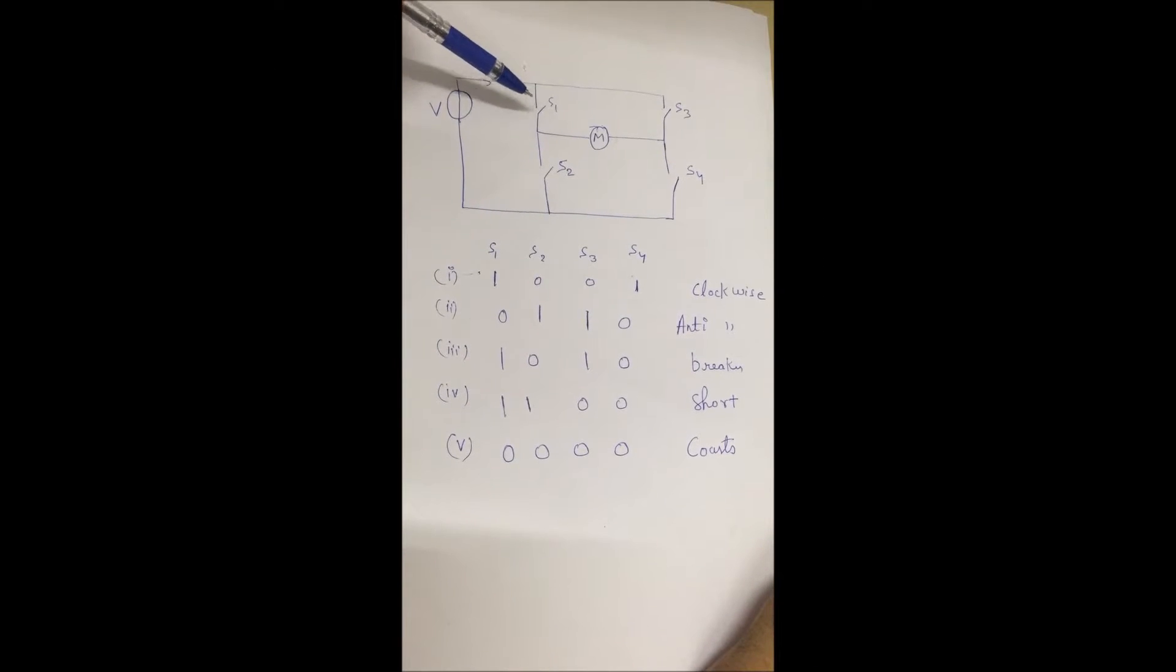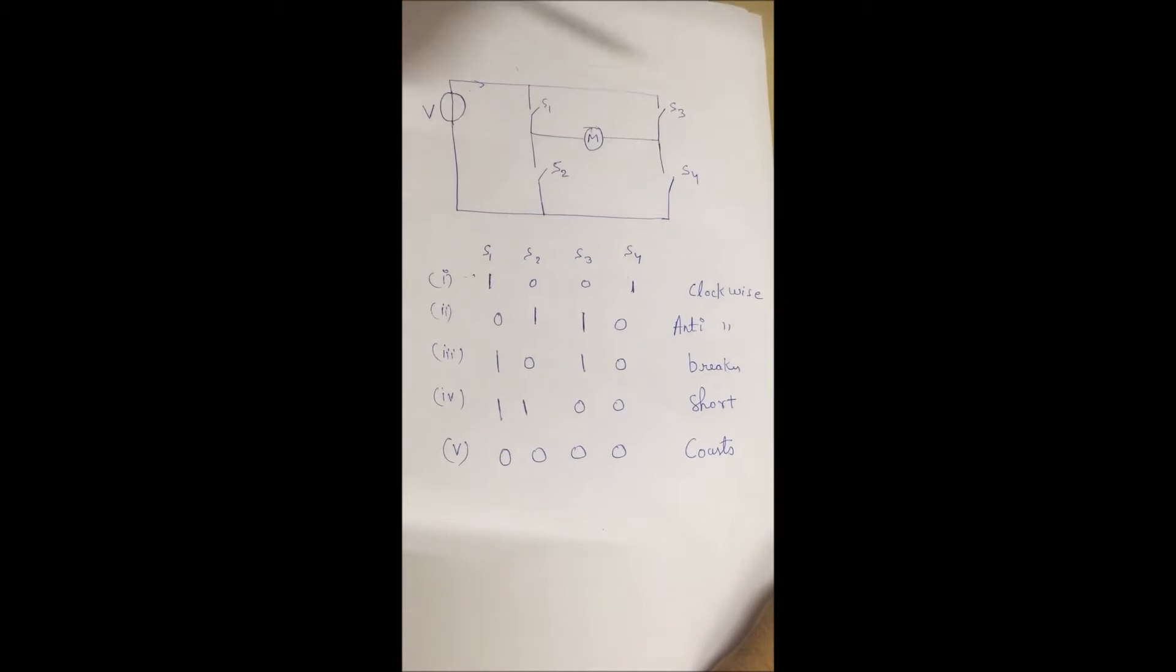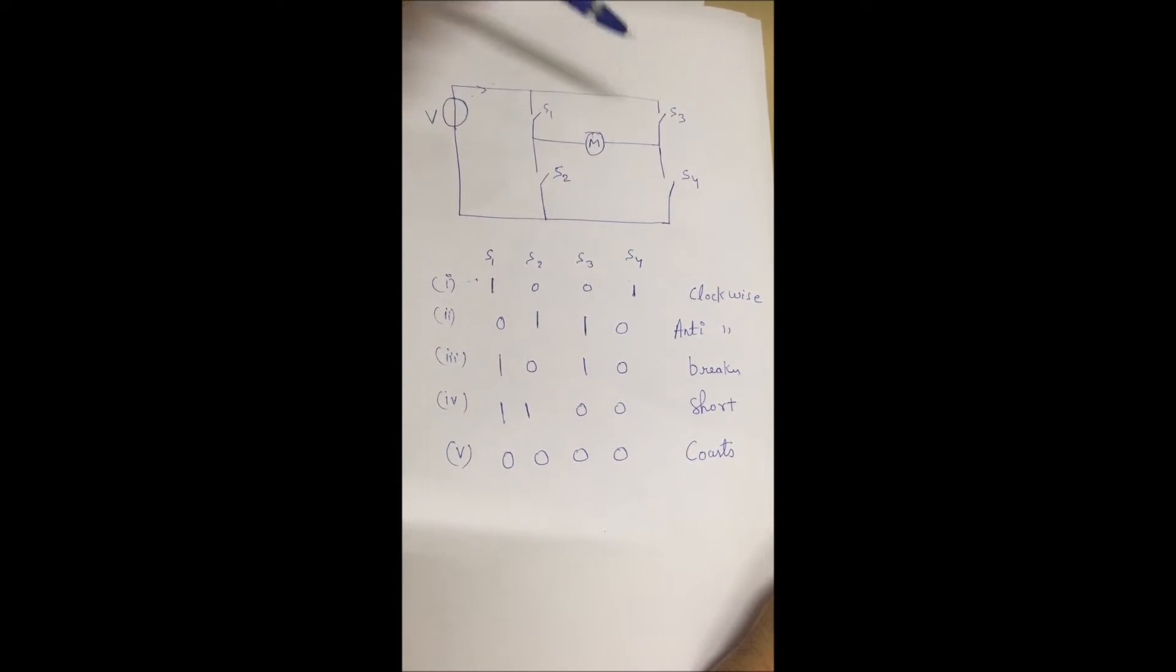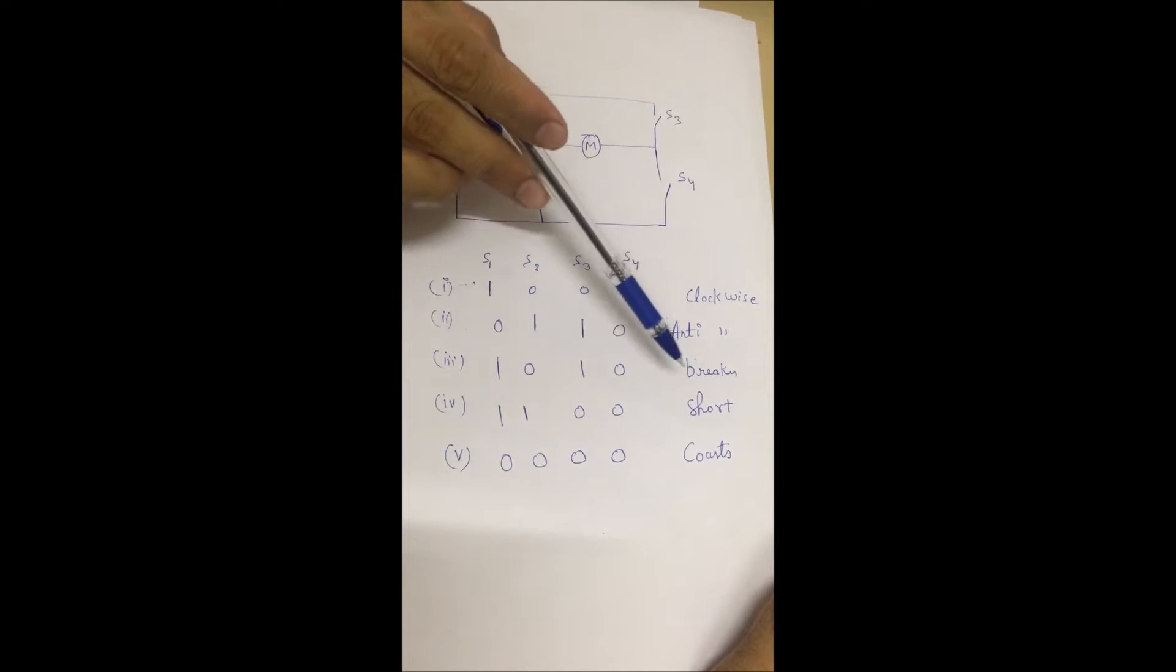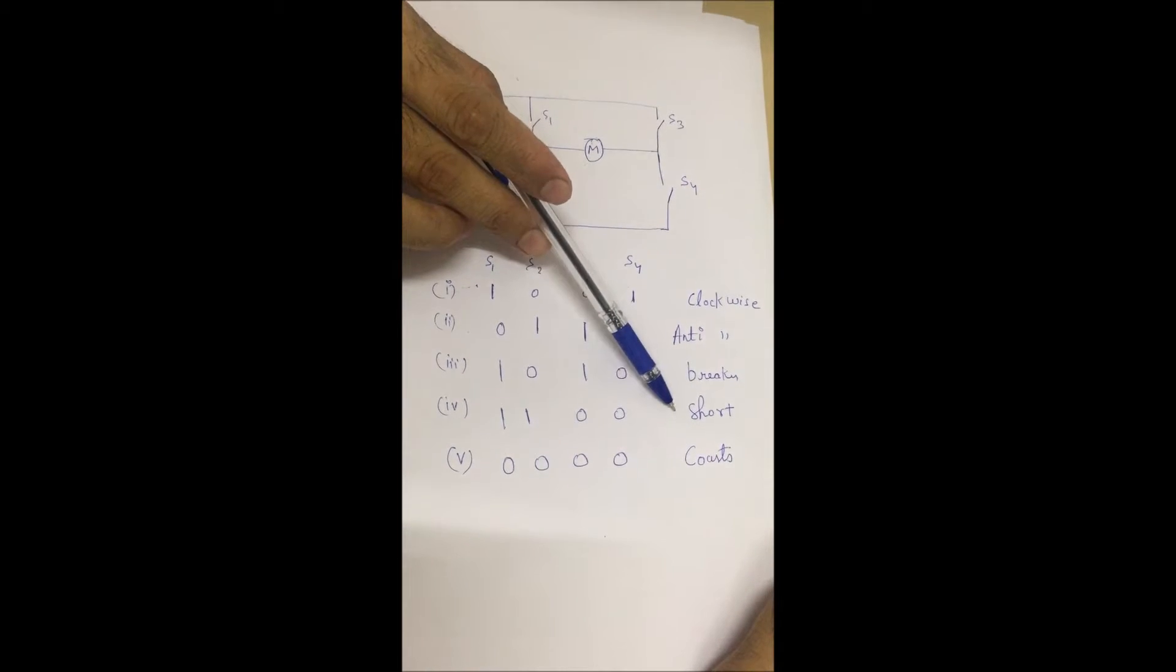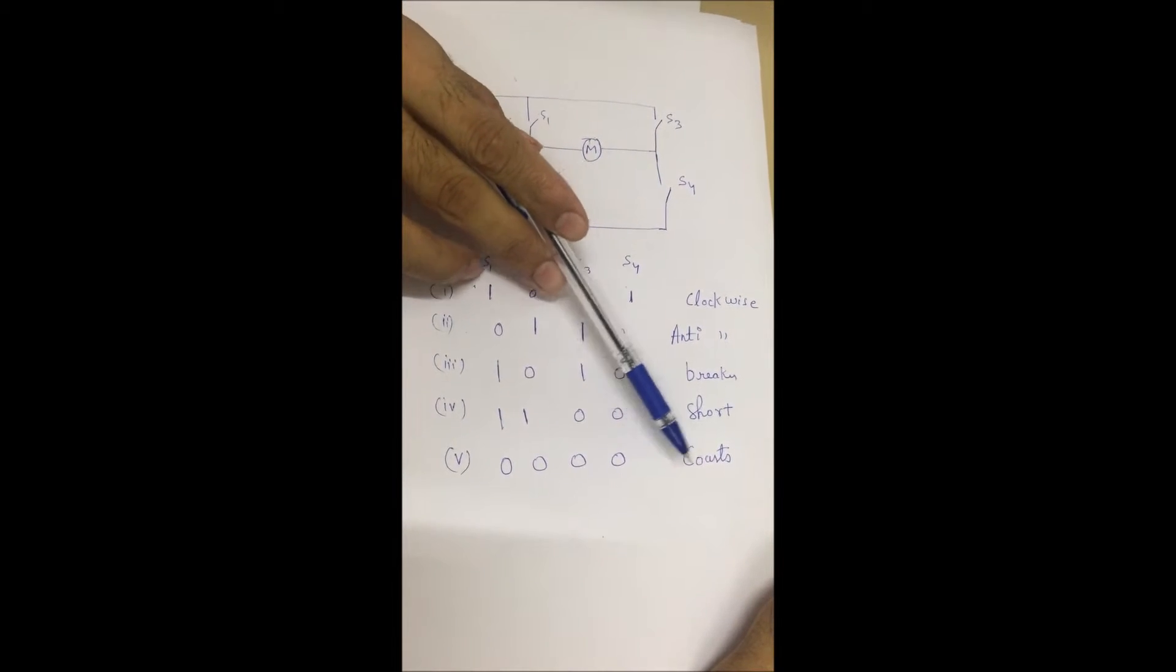H-Bridge has 4 switches S1, S2, S3, S4. These are the 5 conditions that arise: first one is clockwise, second one is anti-clockwise, third one is brake, fourth one is short, and fifth one is coast.